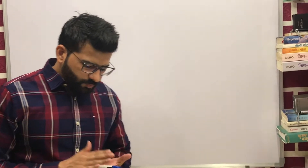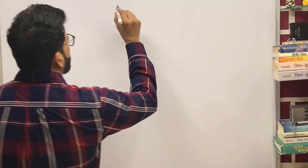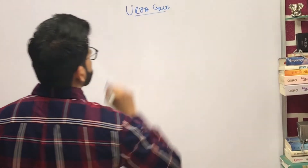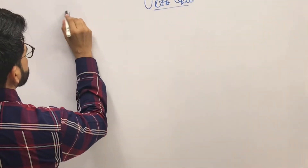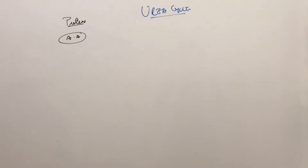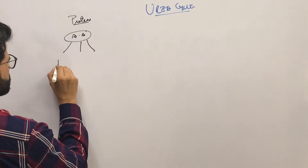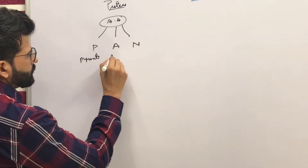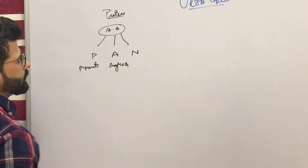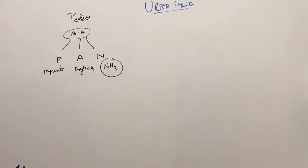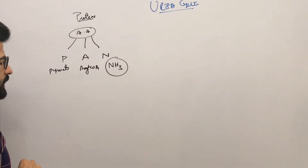In biochemistry today we will be taking up the urea cycle. When we consume proteins, the amino acids are broken down into three things: pyruvate, acetyl-CoA, and ammonia waste — that is the nitrogen waste. This NH3 has to be removed from the body.